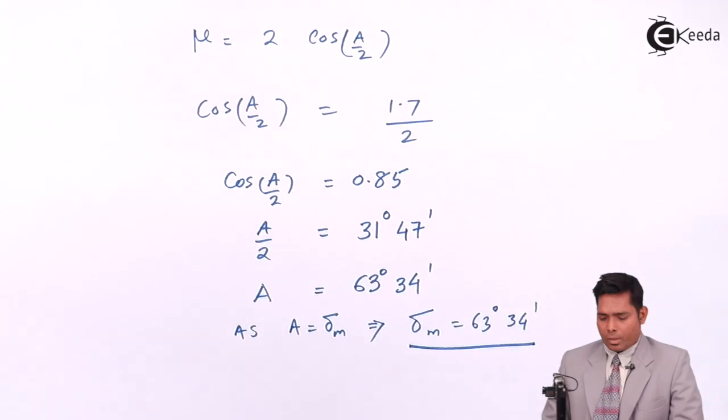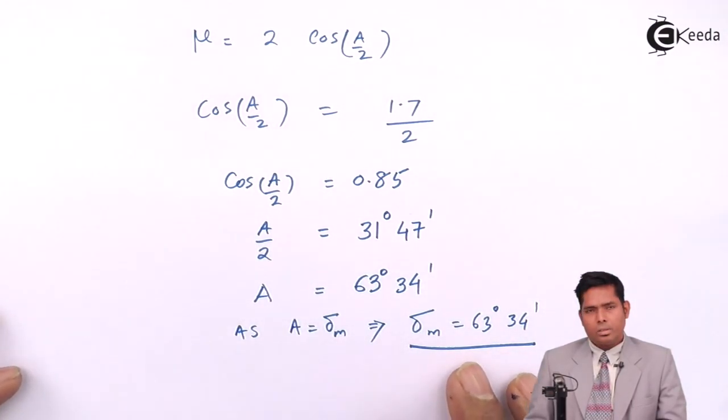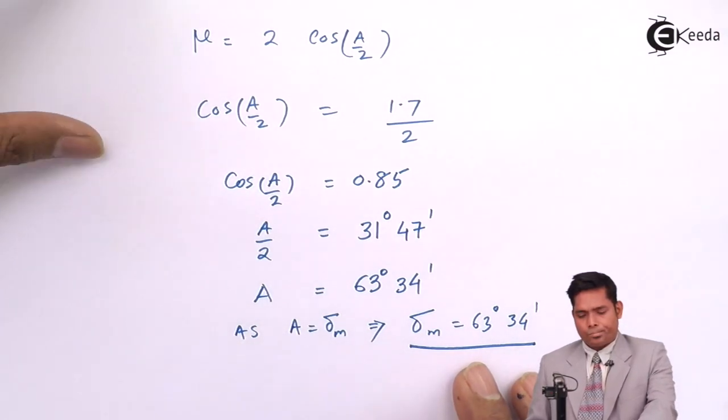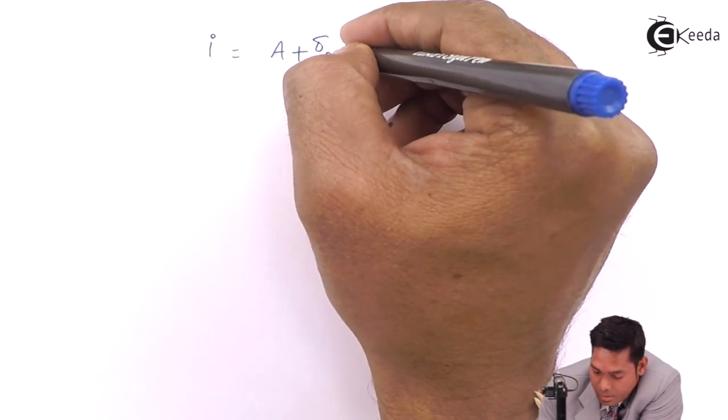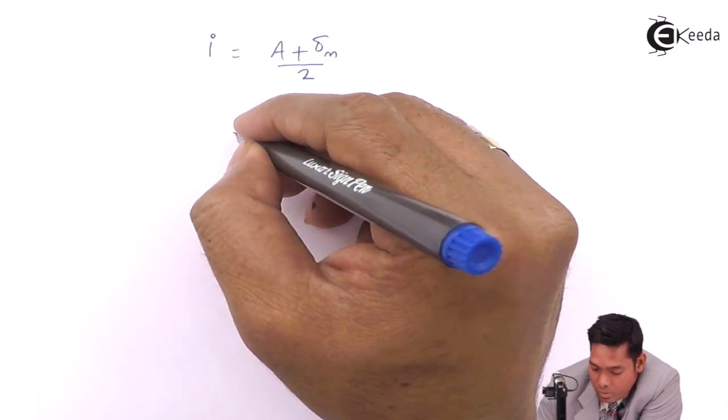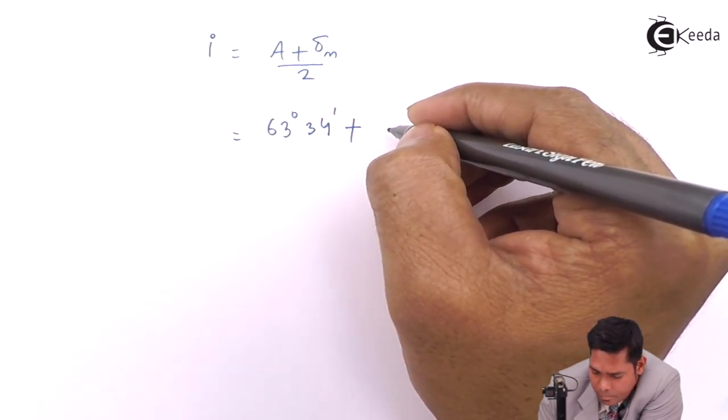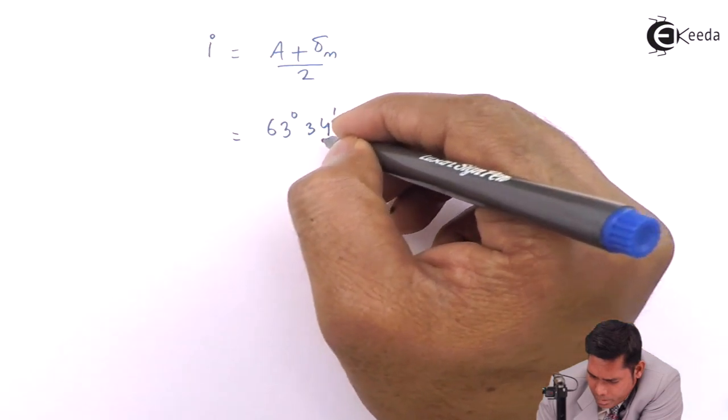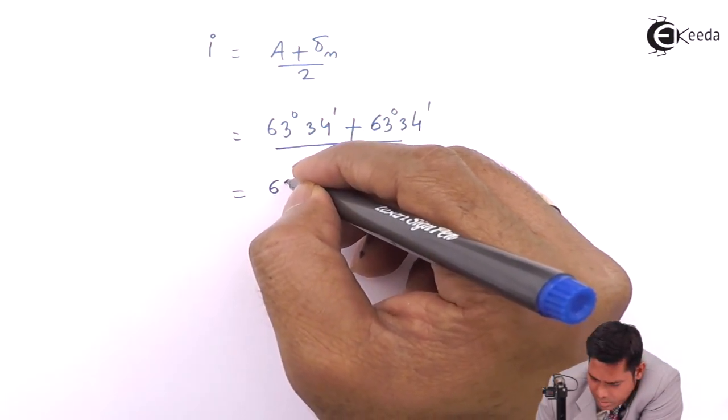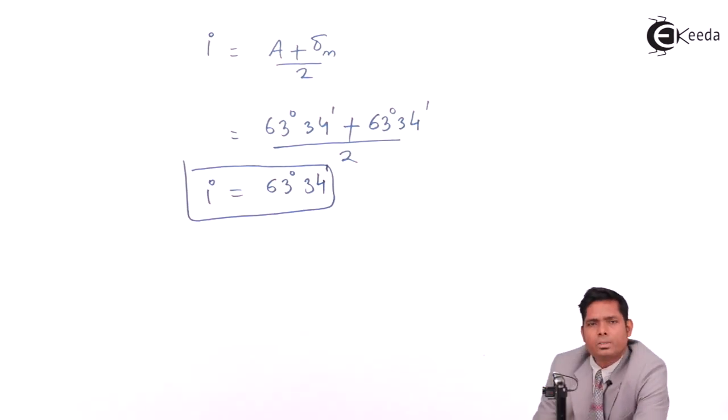This is the answer to the first part of the question. For the second part, we need to proceed further. For what value of I does this happen? We know that I is A plus Delta M divided by 2. So I comes out to be 63 degrees 34 minutes plus Delta M which is also 63 degrees 34 minutes, divided by 2.